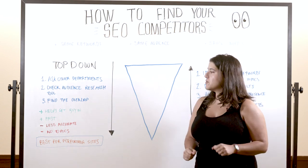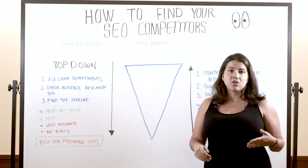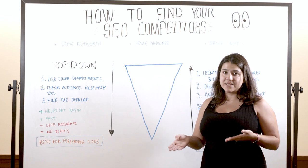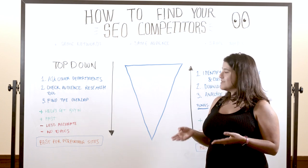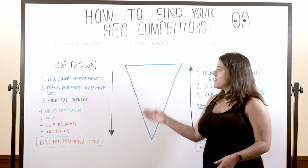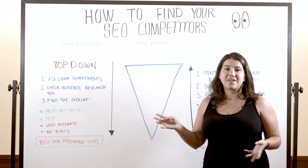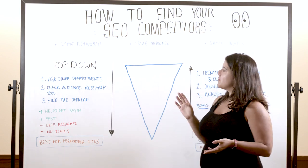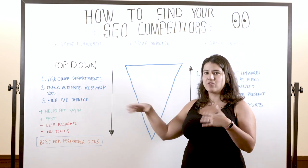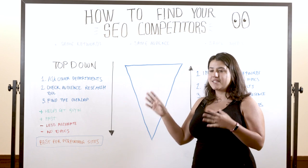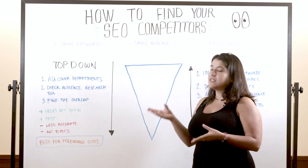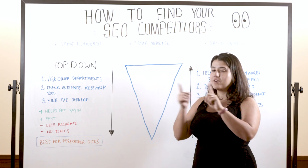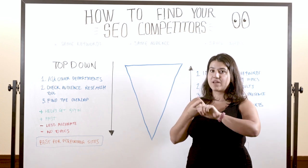The next thing you're going to do is check an audience research tool — I recommend True Competitor by Moz. And then you're going to want to find the overlap between the two lists. So out of the list that your departments and colleagues say are your competitors and the list that your tool produces, you're going to want to find the overlap.